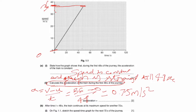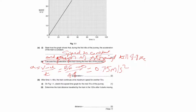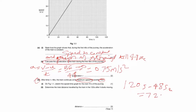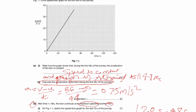For the next part: after t equals 48 seconds, the train continues at its maximum speed for another 72 seconds. We need to sketch the speed-time graph for the next 72 seconds. The total time becomes 48 plus 72 equals 120 seconds. Since the speed is constant at maximum, this will be a straight horizontal line from t = 48 to t = 120.